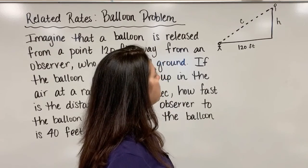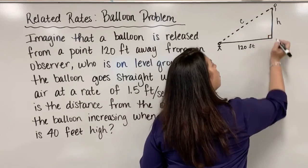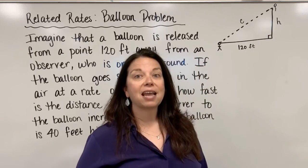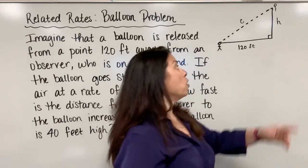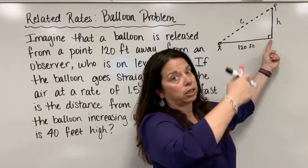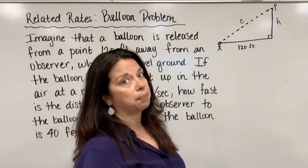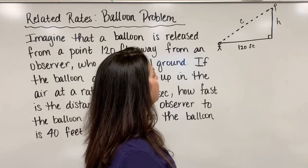Now this also represents a right triangle. We know this is a right angle because we started that balloon here on the ground and it's going vertically straight up. So what comes about here is a perfectly right triangle.